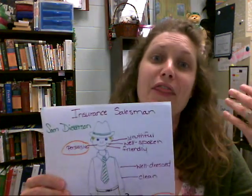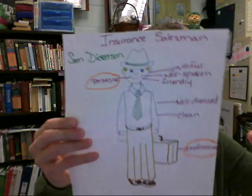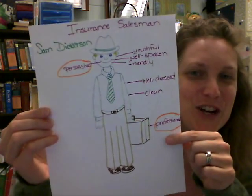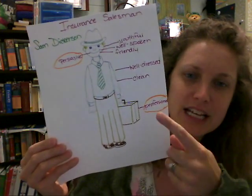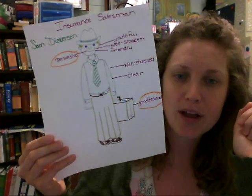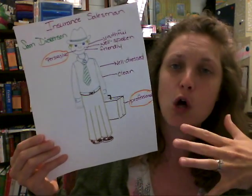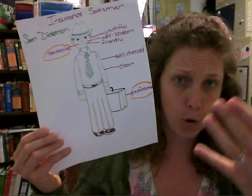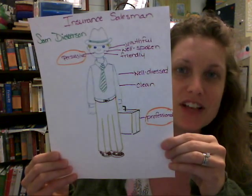I had my students draw their initial perspective of a salesman. This is the good old Sam Dickerson insurance salesman. He looks like a really nice guy. Adjectives: youthful, well-spoken, friendly, well-dressed, clean, professional. He looks very nice and orderly and ready to sell something. This was one group's interpretation of a salesman.